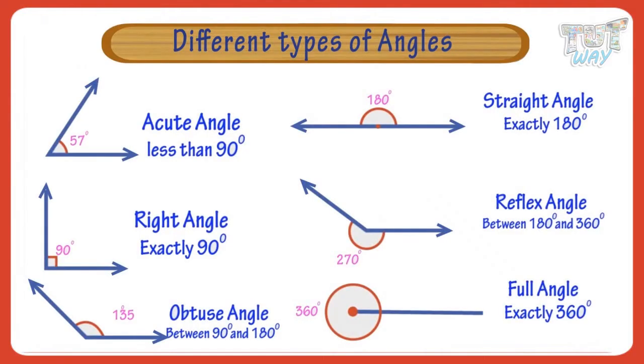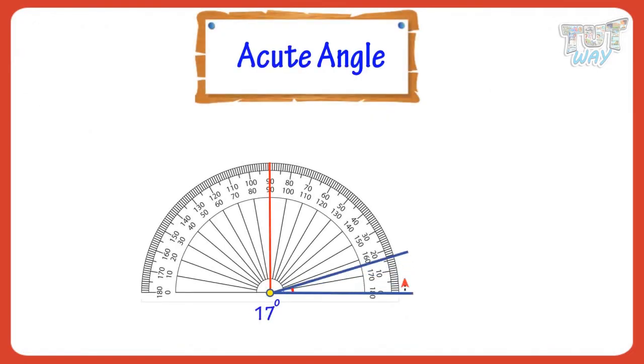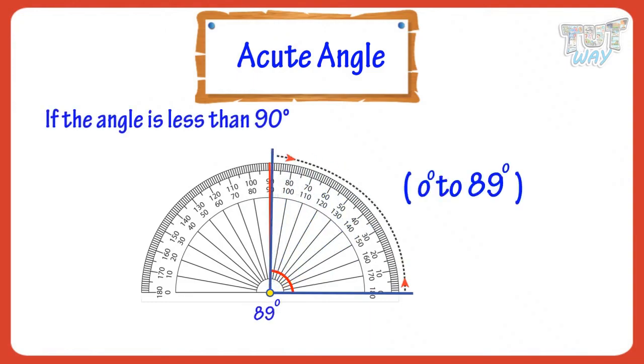Different types of angles. Now, let's learn different types of angles. First of all, acute angle: If the angle is less than 90 degrees, we call it an acute angle.